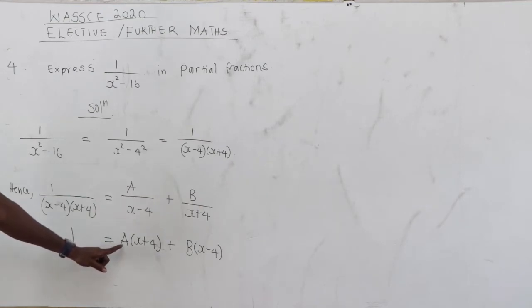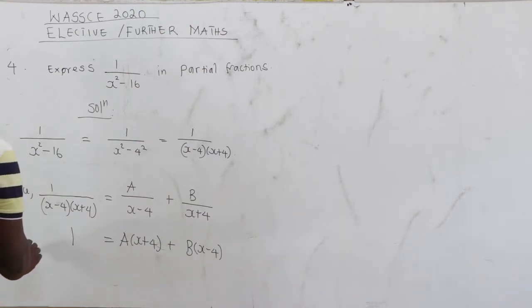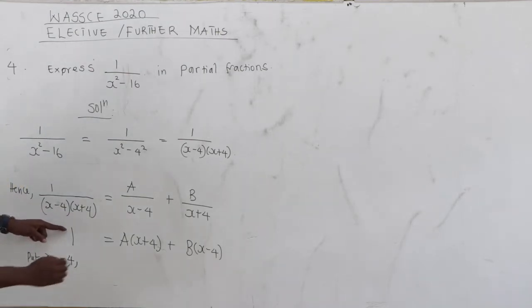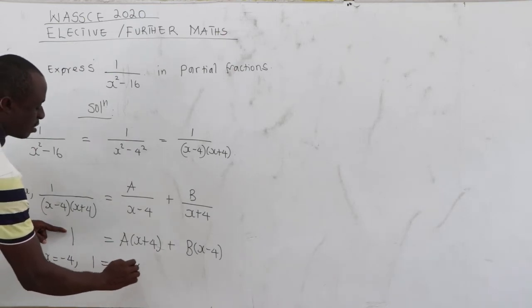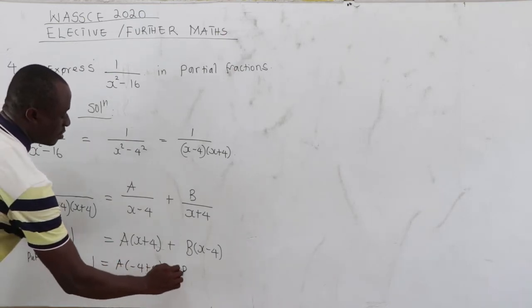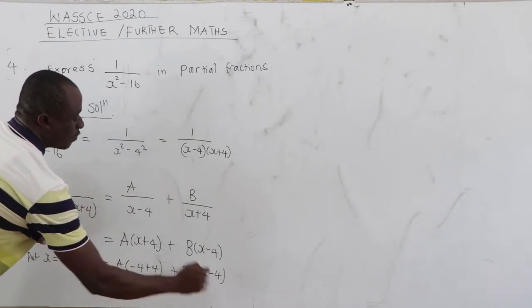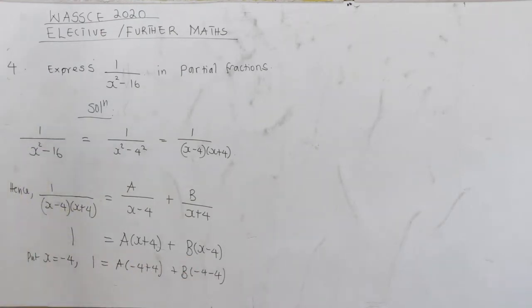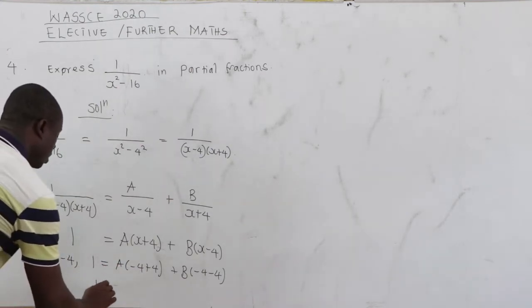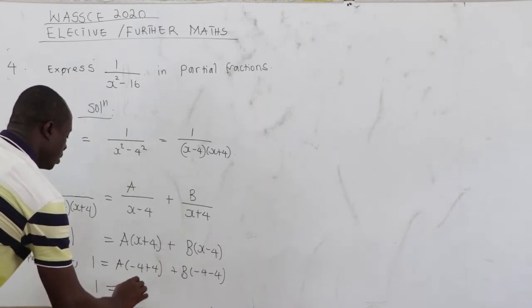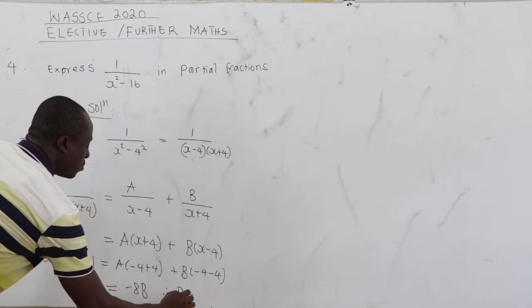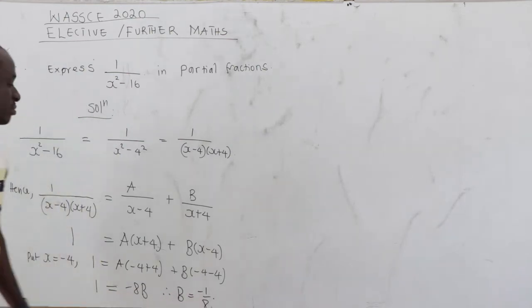Now, if we want to eliminate A, then we can let x to be equal to negative 4 so that it will eliminate our A. So put x to be equal to negative 4. So we have 1 equal to A, negative 4 plus 4 plus B, negative 4 minus 4. Now this becomes 0. 0 times A is 0. So you have 1 to be equal to negative 8B. Therefore, B is equal to negative 1 all over 8.